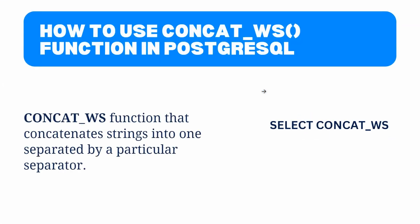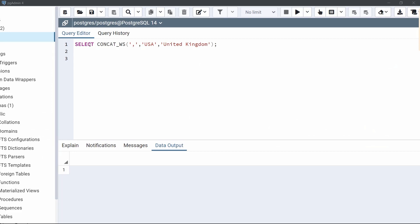Now let's look at how to use the concat_ws function in PostgreSQL. This function concatenates strings into one string separated by a particular separator like a comma, hyphen, space, or any other separator. WS stands for 'with separator.' Within the concat_ws function, we first specify the separator, then the strings to combine. In the example, the separator is a comma, and the two values are USA and United Kingdom. After executing, the output shows USA and United Kingdom separated by a comma.